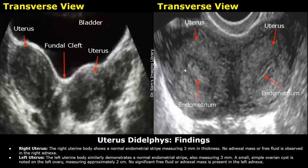Right uterus: the right uterine body shows a normal endometrial stripe measuring three millimeters. A small simple ovarian cyst is noted on the left ovary, measuring approximately two centimeters by two centimeters. No significant free fluid or adnexal mass is present in the left adnexa.